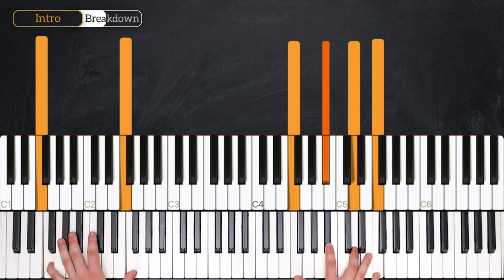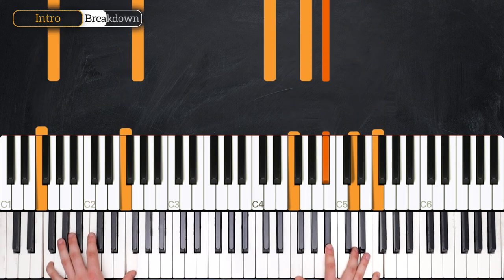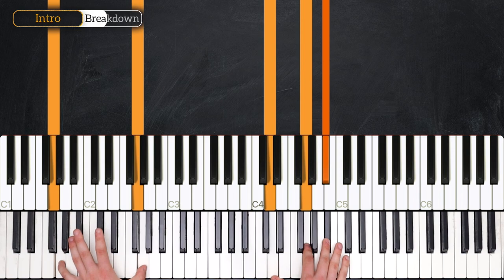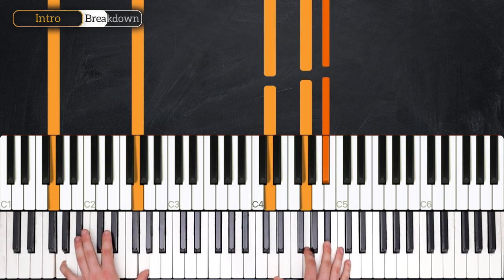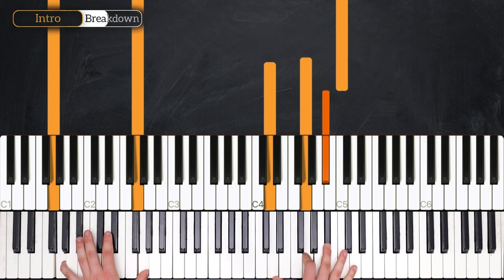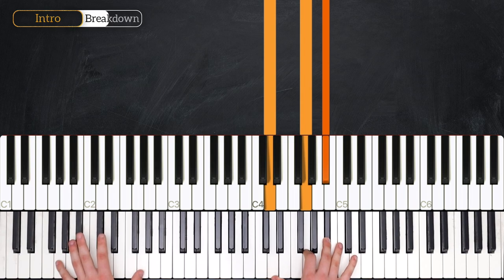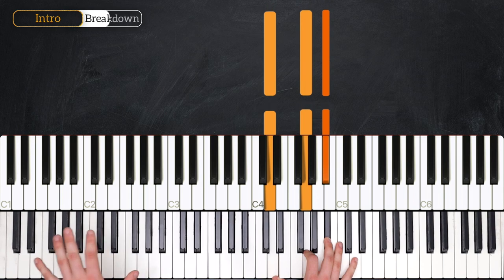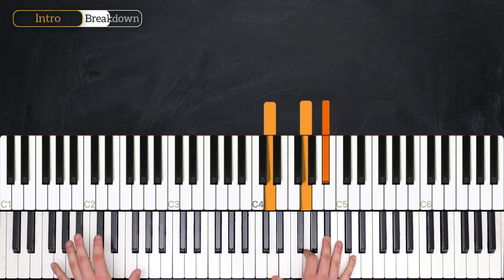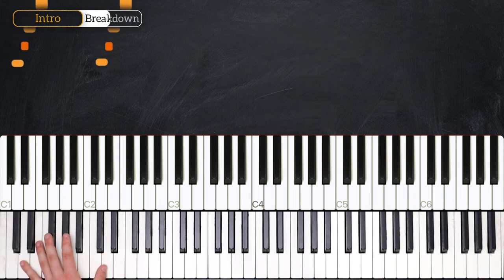Then in the next bar we're going to land on the G minor. We have G octave in the left hand, we play our G minor inversion up top, and then we go up to this C and back to the G minor chord. And we let go of the G octave in the left hand when we land on this G minor chord. So really slowly those two bars.